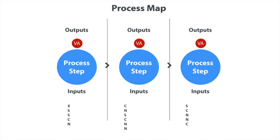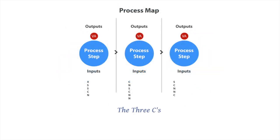Finally, in step five, you identify each process step as either value-added or non-value-added. The value-added steps must meet the criteria of all three C's. The first C stands for customer cares — are you doing things the customer actually cares about? C number two is for changes — it transforms information or materials. The third C stands for correct, meaning done right the first time.